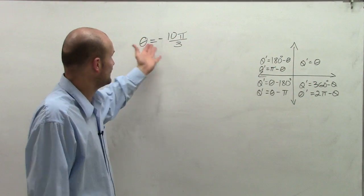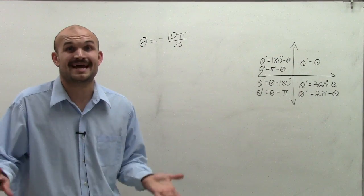But to figure out theta equals negative 10 pi over 3, we need to determine where does that angle lie, right?